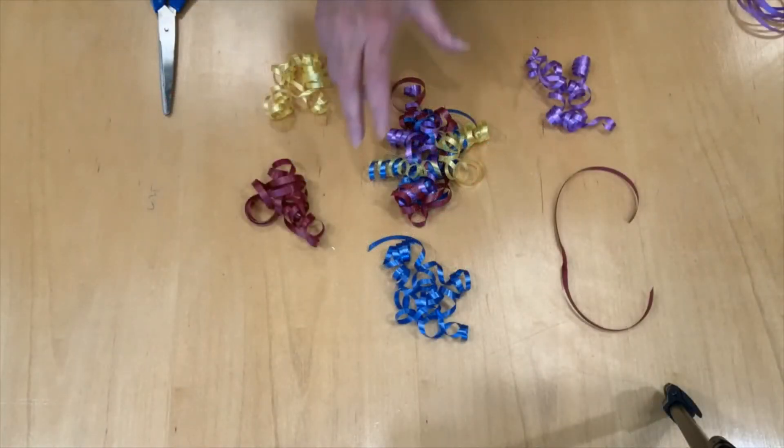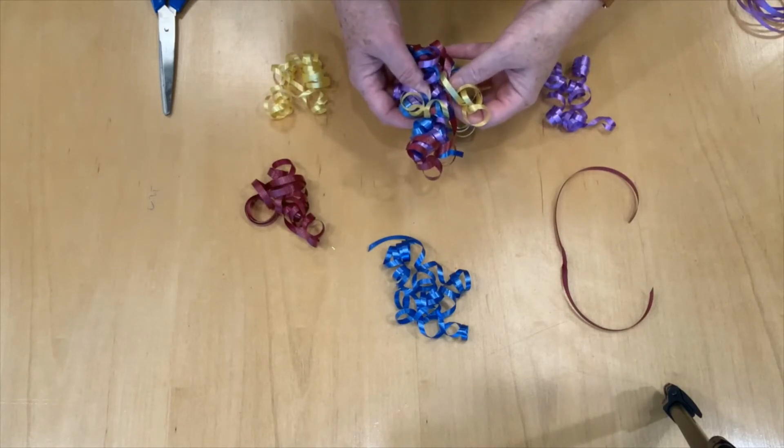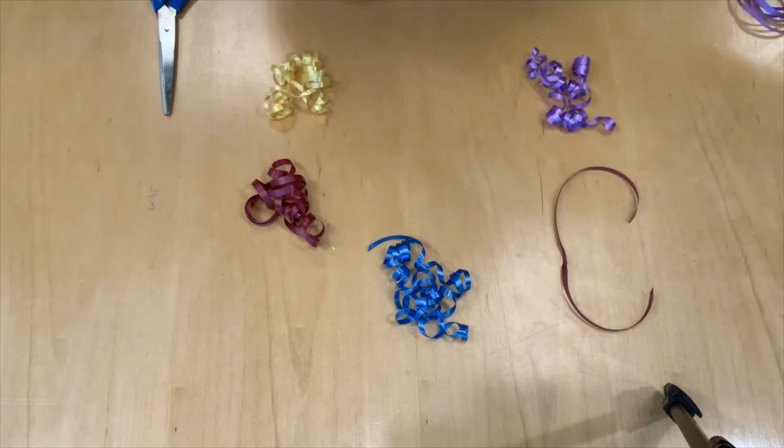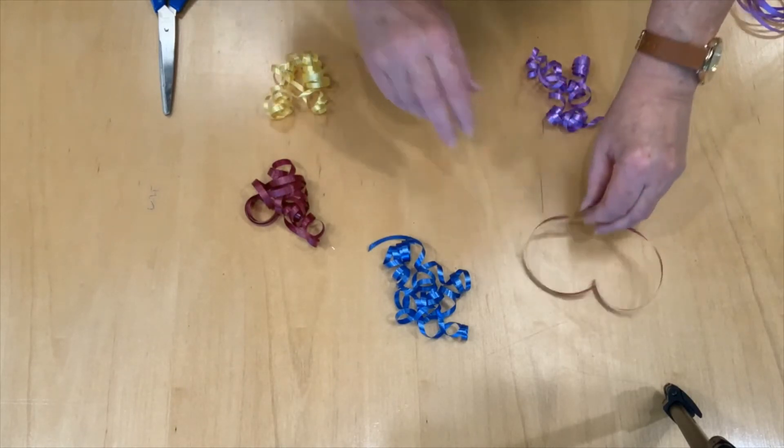The last bow is going to be the curly bow. Looks great. So easy to make. For that, you're going to need four pieces of curling ribbon and one small piece, which we're going to use to tie it together.